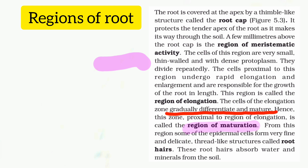The root is differentiated in the maturation zone. Root hairs are formed in this zone — they arise from the meristematic zone and are unique thread-like structures responsible for water absorption.